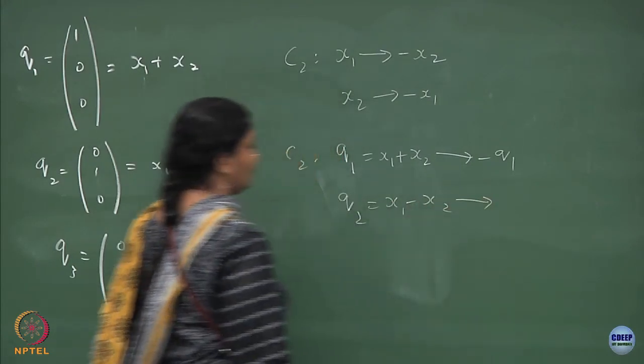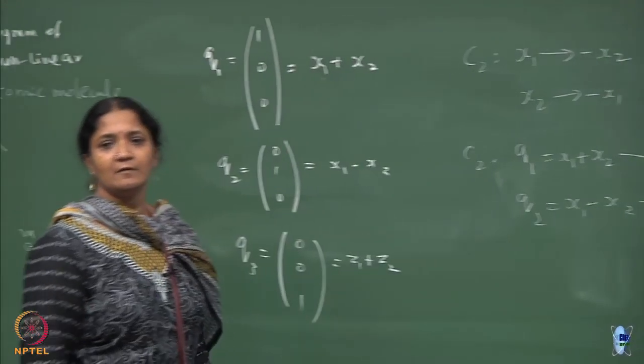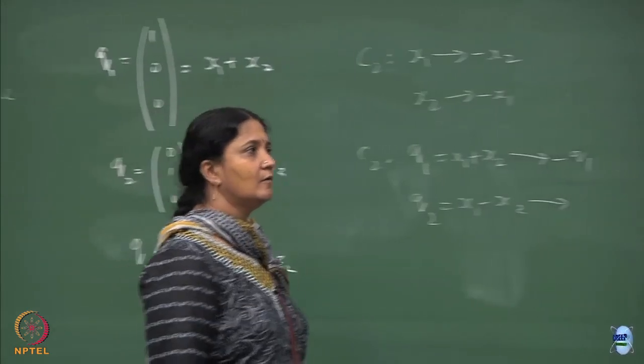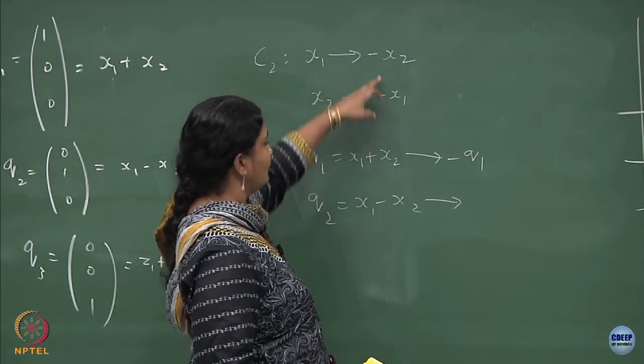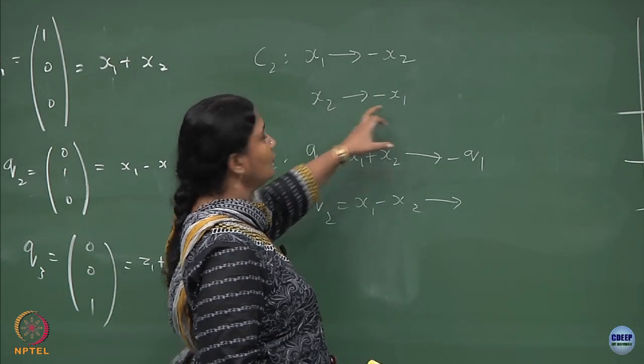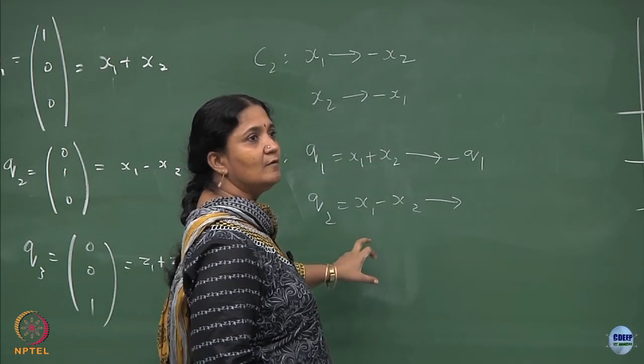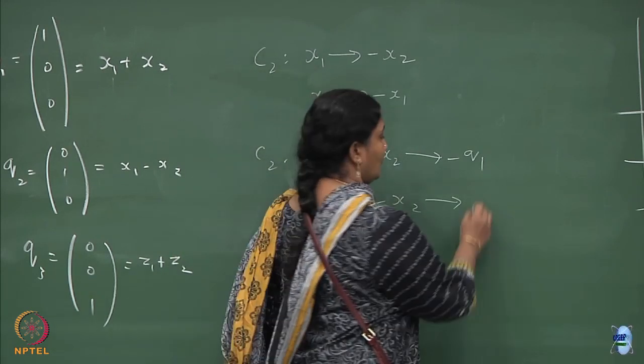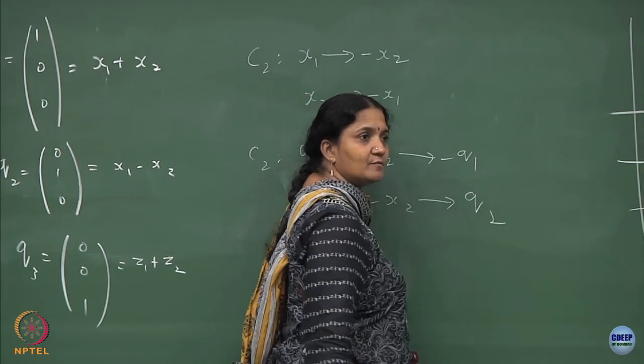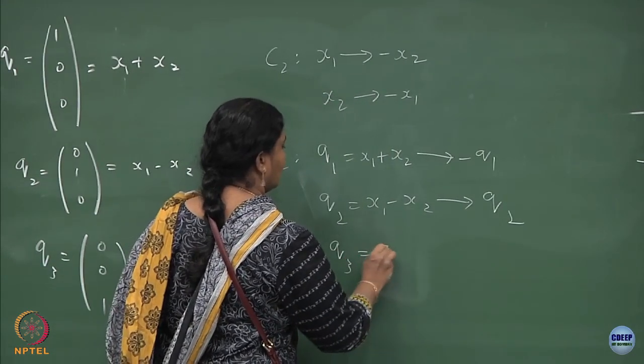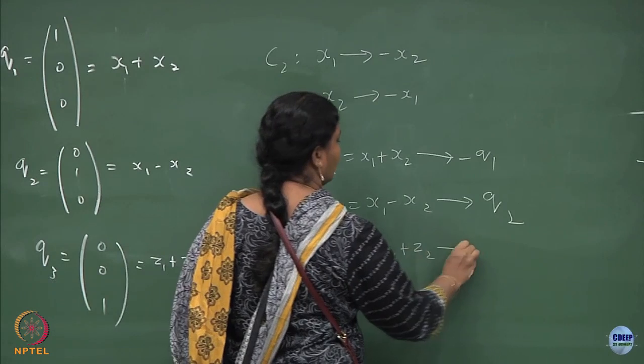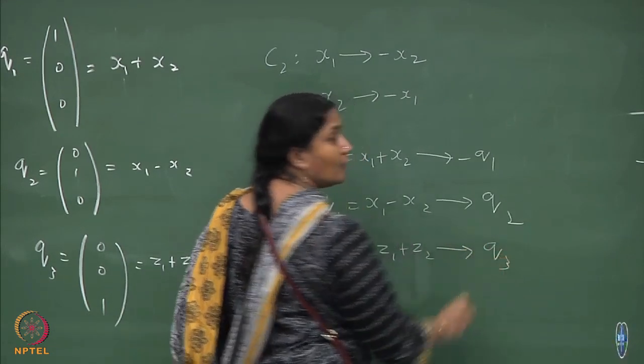What about q2, that is the difference? x1 will go to minus x2, x2 will go to minus x1. So q2 will go to q2, no change. What about q3?